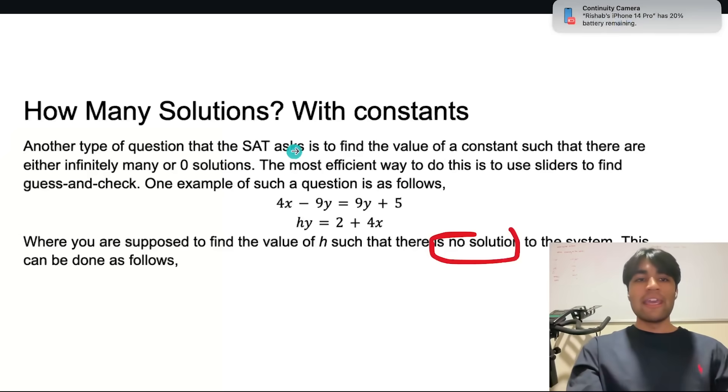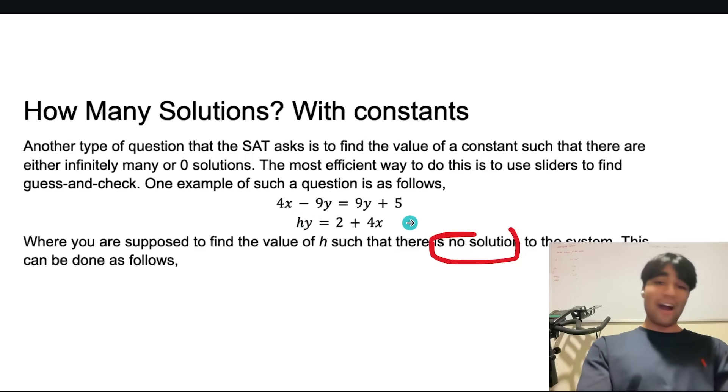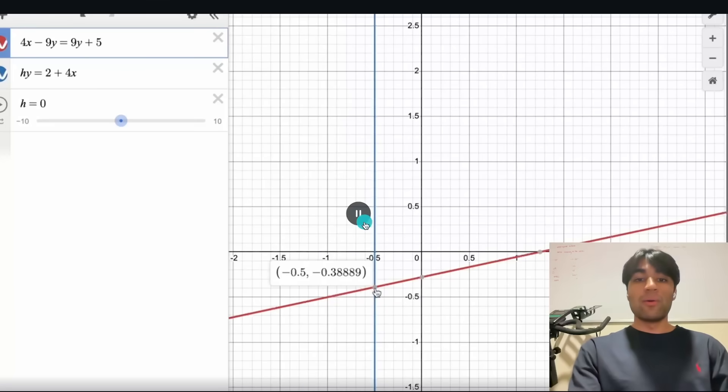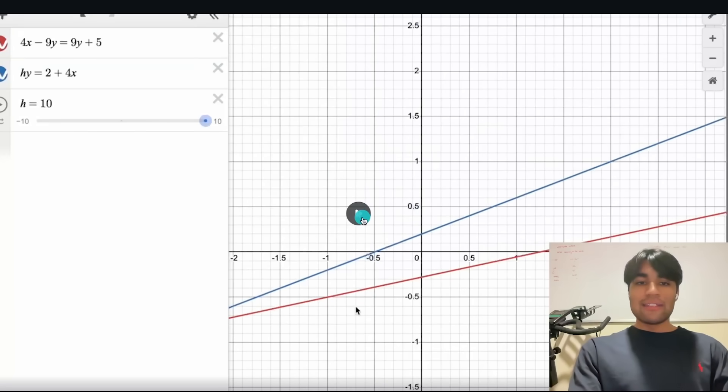Now this type of question is also interesting. You have how many solutions but this time with constants. So as you can see like 4x minus 9y equals 9y plus 5 and then hy equals 2 plus 4x. So this is pretty disgusting. It's an annoying system of equations but as you can see we need to find the value of h such that there's no solution to the system and I think students will often get really confused like wait how do I solve that? Desmos allows you to solve the value of h. It allows you to also find when there's no solution. Here's how you can do it. Once again type in those two equations but this time when you type in the letter h it'll create a slider for h equals 0. It'll just start at h equals 0. Now you have your lines and this blue line here is assuming that h equals 0. But as you can see it intersects with the red line. That's a solution. But we want a system where there's no solution. So what value of h do we have to do for that?